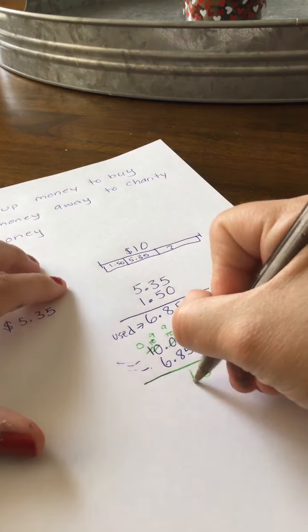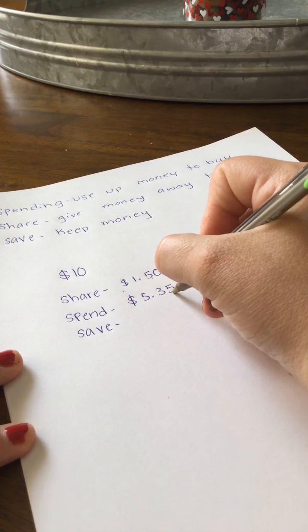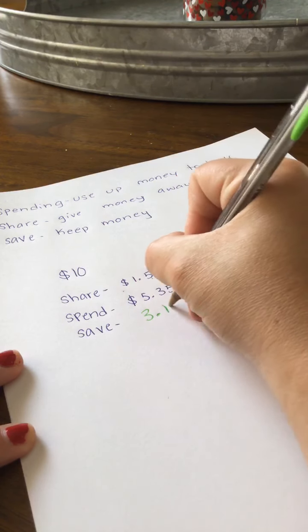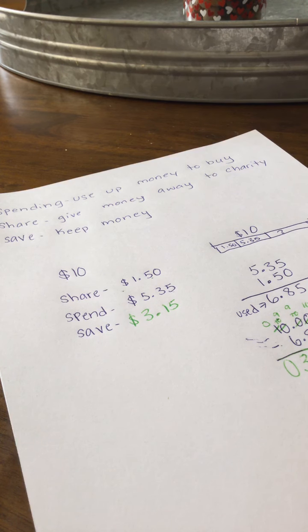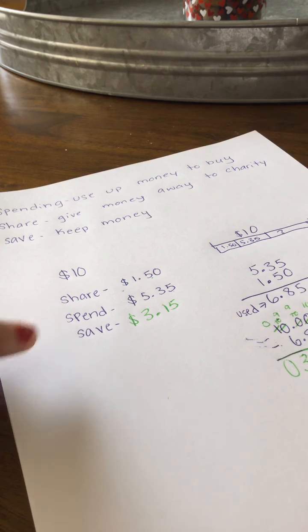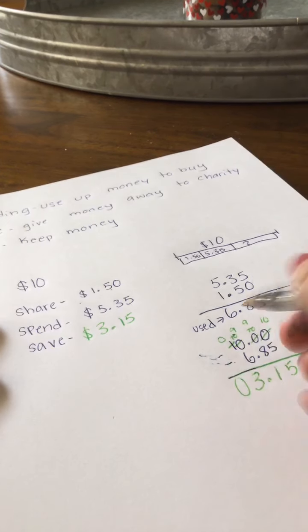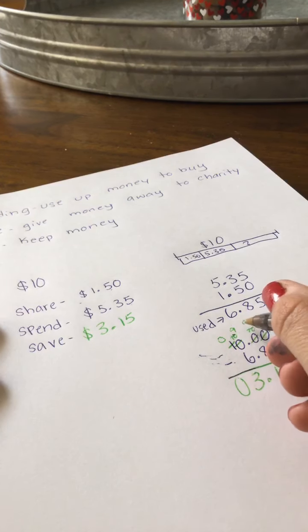9 minus 8 is 1. Don't forget to drop your decimal. 9 minus 6 is 3. And 0 minus nothing is 0. So the answer is $3.15. This is saying I shared $1.50, I spent $5.35, and I saved $3.15. Now if you did your math correctly, these three should add up to your total. It doesn't matter which one of these is your missing piece — the process is the same: find what's been used up and then find the difference from your original total.